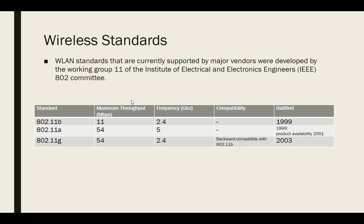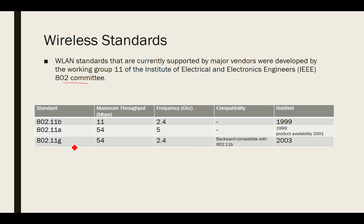Now we will discuss wireless standards. The wireless standards currently supported by major vendors were developed by working group 11 of the IEEE 802 committee. The most common standards are 802.11b, 802.11a, and 802.11g, and their maximum throughput, frequencies, and market availability years are shown.